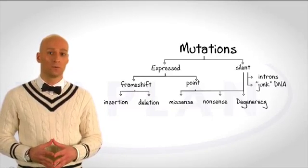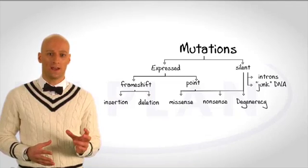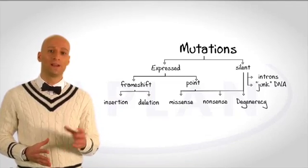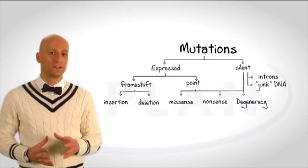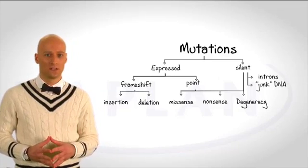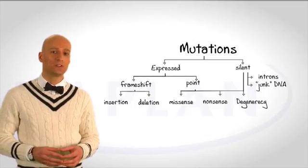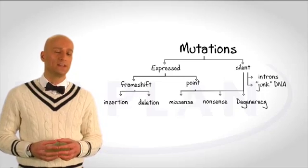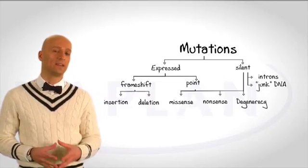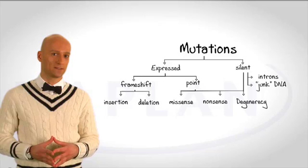Point mutations arise when a single nucleotide is substituted for another nucleotide. This can result in two different types of point mutations. One is known as missense, in which the codon that codes for a particular amino acid is changed into a codon that codes for a different amino acid.